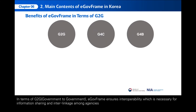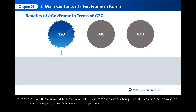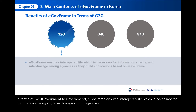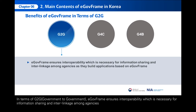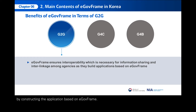In terms of G2G, government to government, E-GovFrame ensures interoperability, which is necessary for information sharing and interlinkage among agencies by constructing the application based on E-GovFrame. This improves inter-agency collaboration.